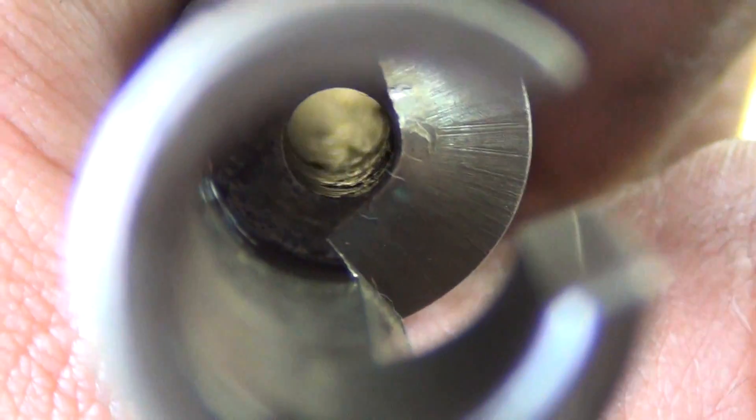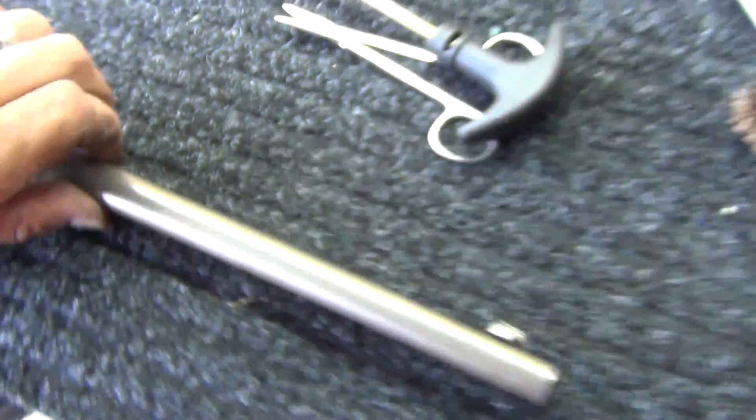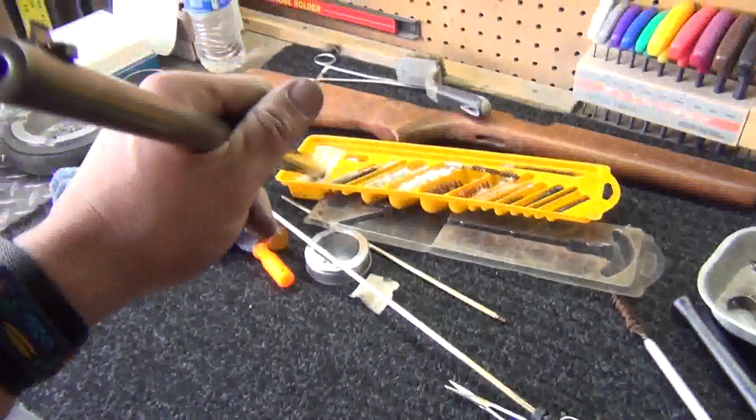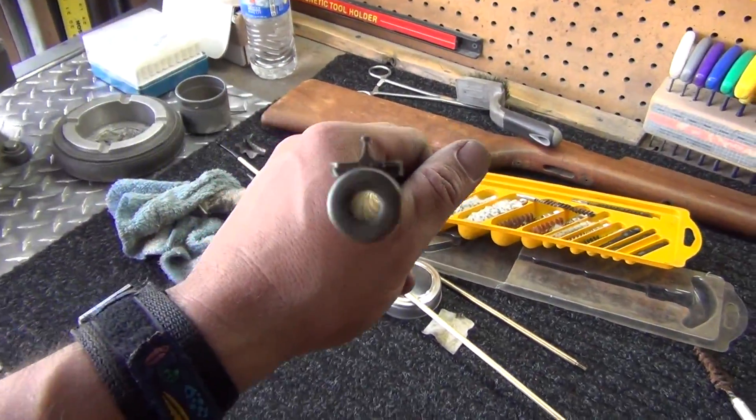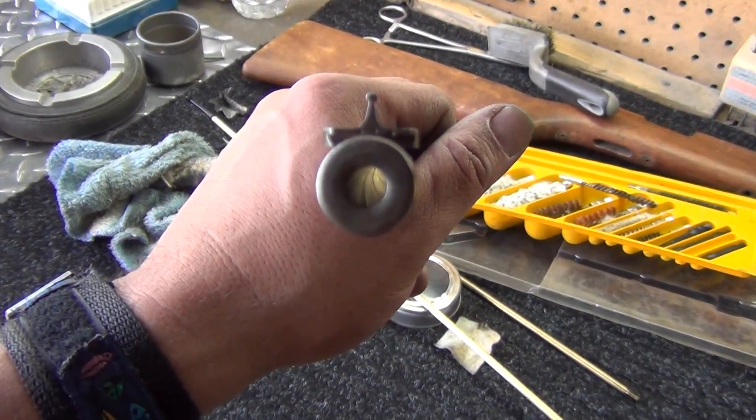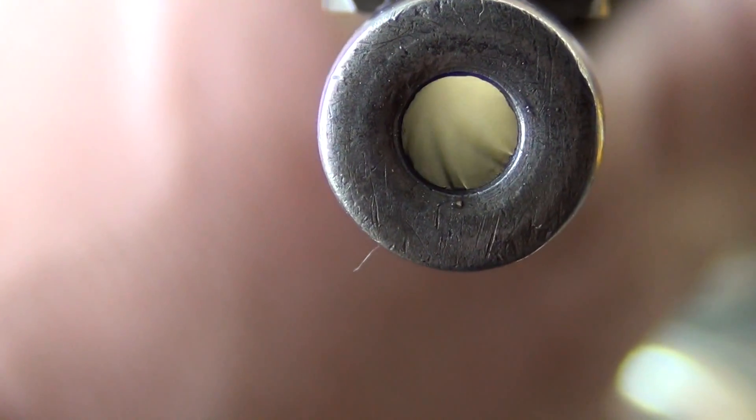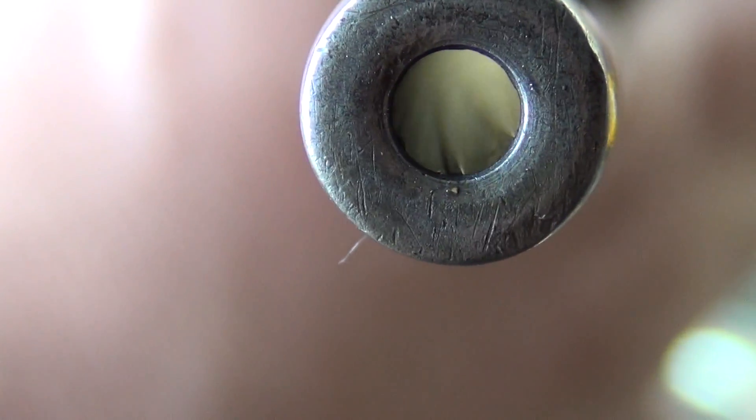I ran a bore patch through it and it's still pretty cruddy, but what it was is it was so gummed up with the rust. What I decided to do was scrub it really well and get some of that rust out, and then I went and scrubbed the crap out of it inside because I'm pretty sure that was all filled with lead.